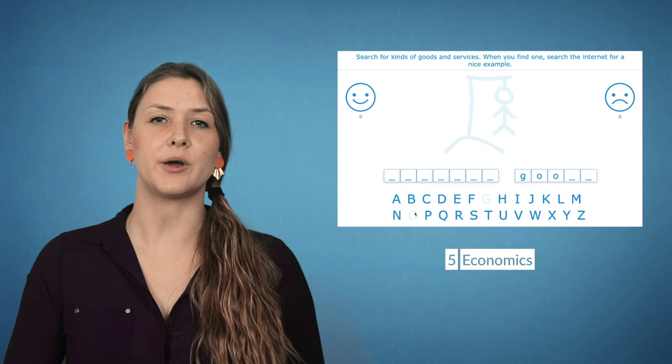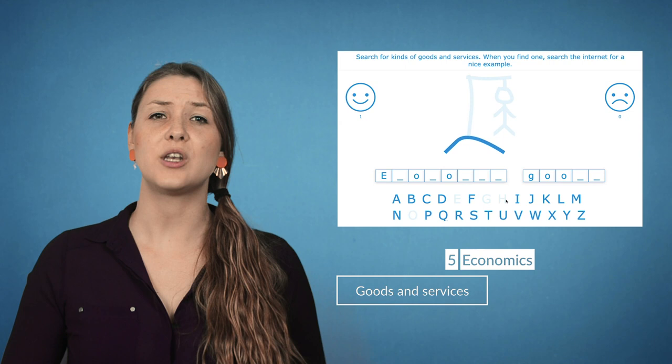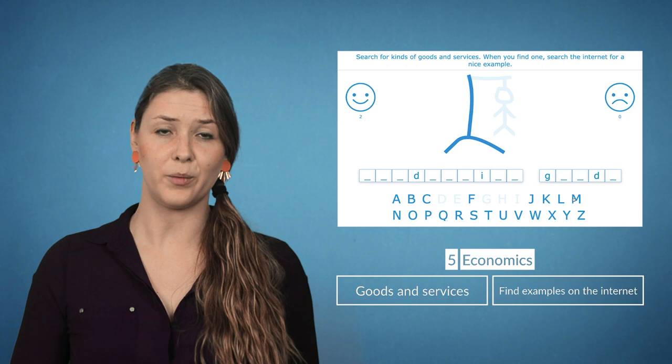To teach your students more about economic goods and services, you can also use a hangman widget. Let them find out all the different goods and services there are and once they've found one, let them look for an example on the internet.